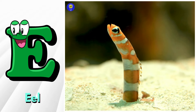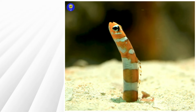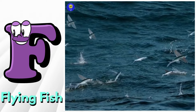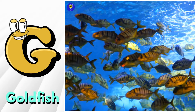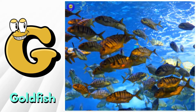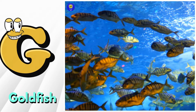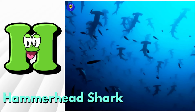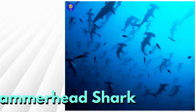E is for eel. F is for flying fish. G is for goldfish. H is for hammerhead shark.